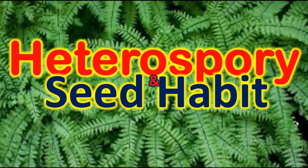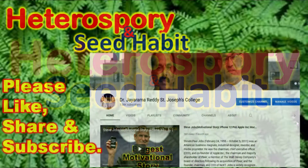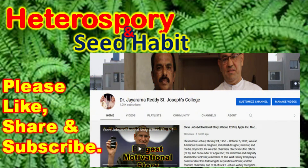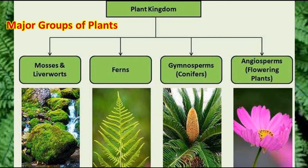Heterospory and seed habit are two important phenomena in plant sciences. The major groups of plants, from the lowest category of land plants, include algae, then bryophytes, pteridophytes, and finally gymnosperms and angiosperms, which are the highest evolved plants.